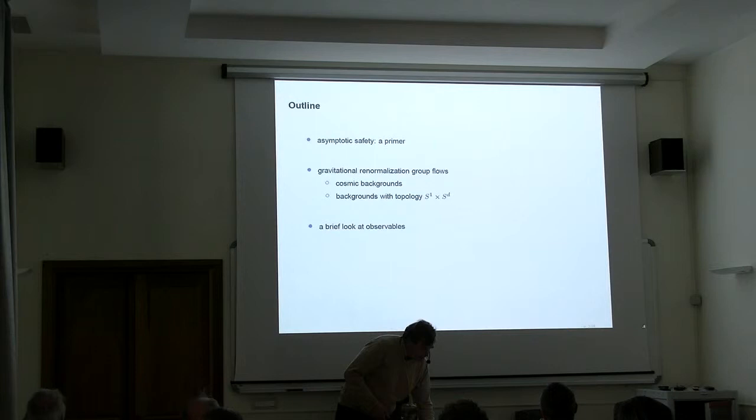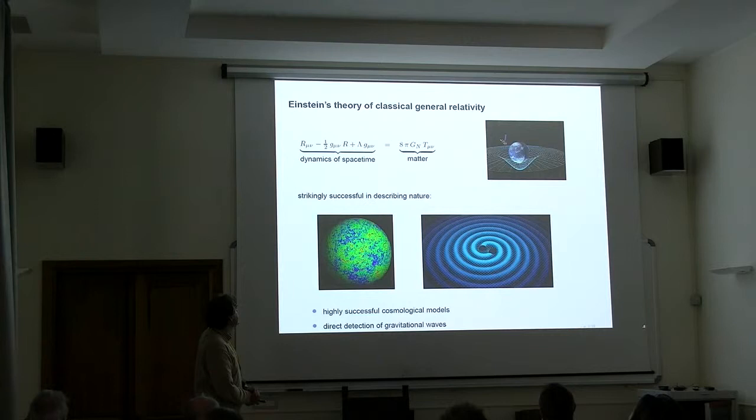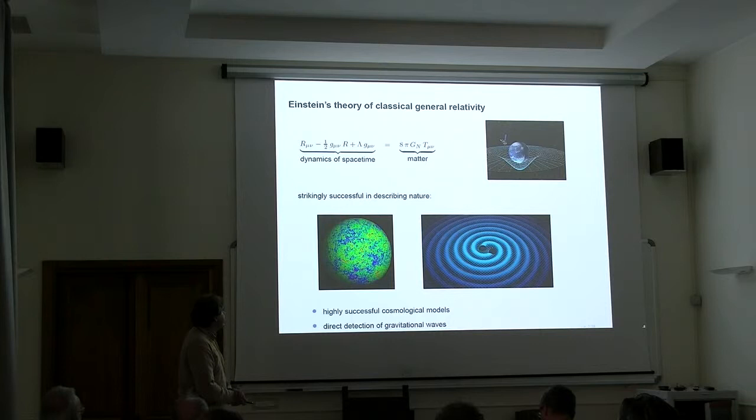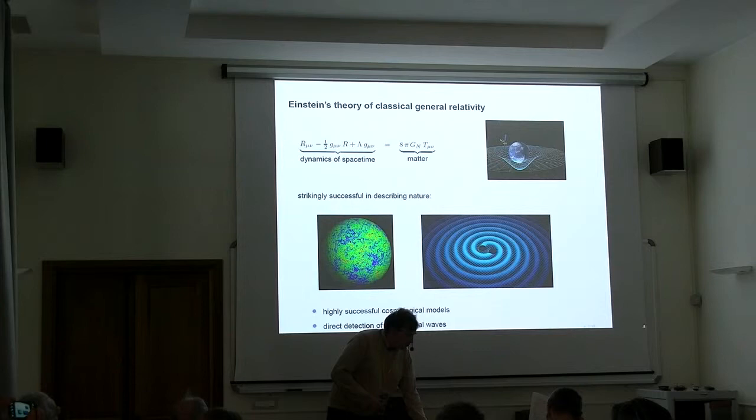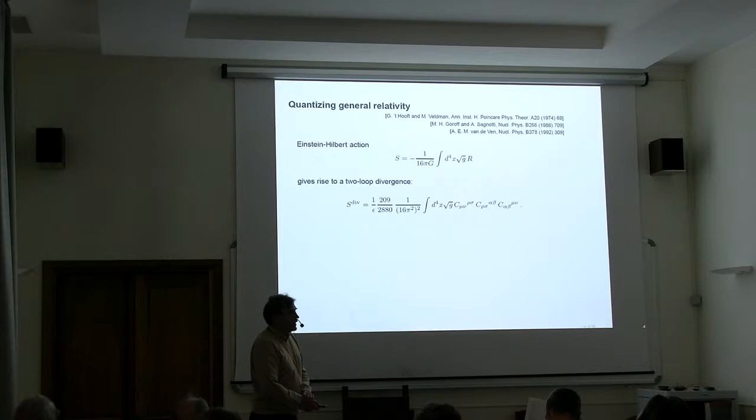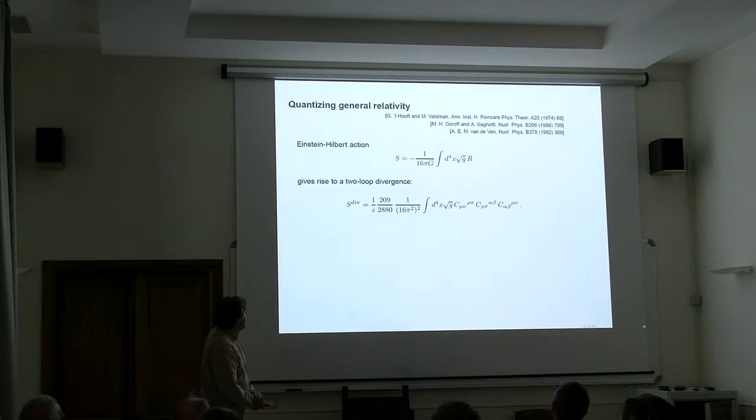We have a highly successful theory of gravity, general relativity. This has allowed us to explain many interesting phenomena. Cosmological models can explain the flatness and the horizon. We have seen the detection of gravitational waves. We have heard quite a lot about this. So here we are extremely successful. The point where we are not so successful is combining general relativity with the laws of quantum mechanics.